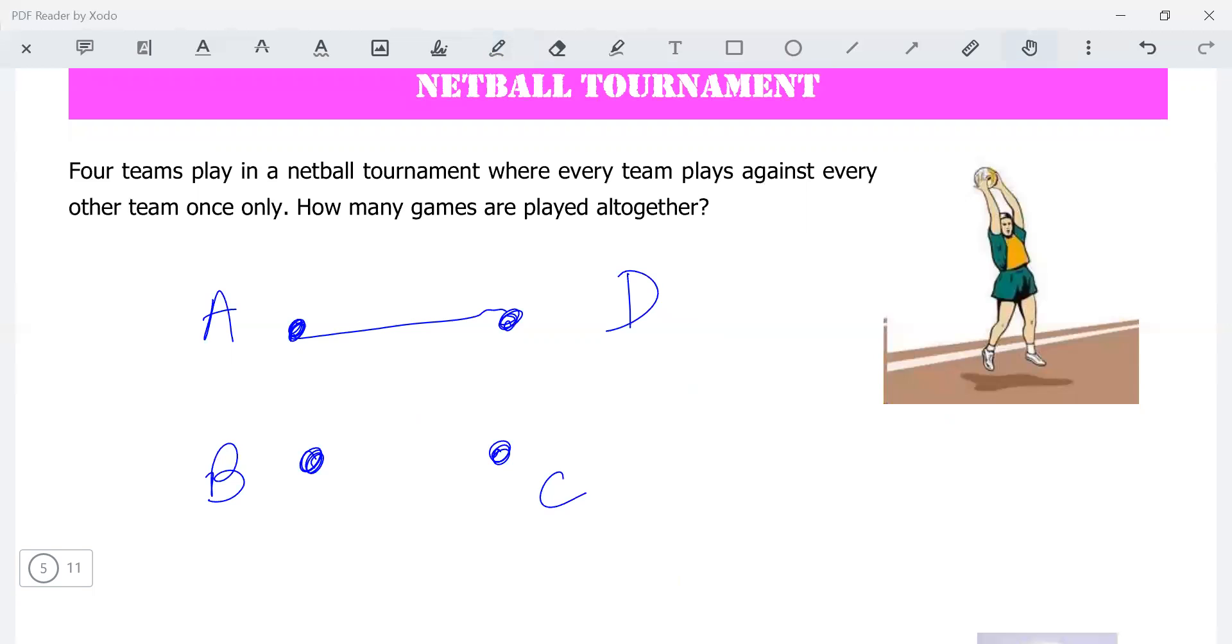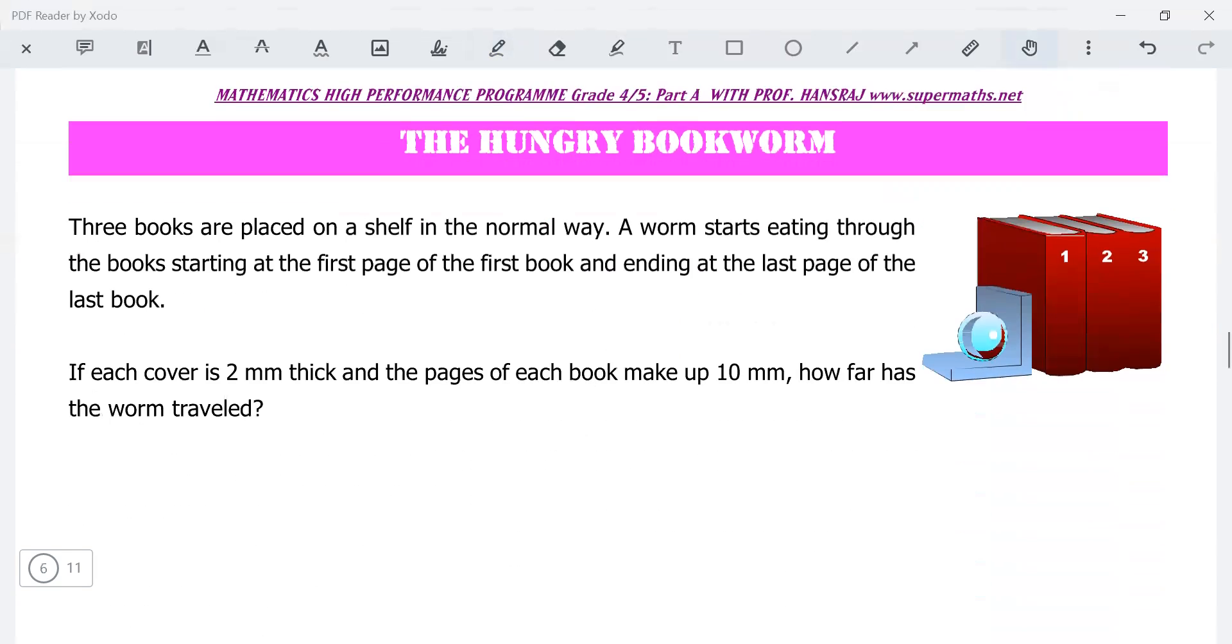A versus D. Then you could have C versus D. But remember, C versus D is the same as D versus C. Like that, carry on and see how many games altogether there are.